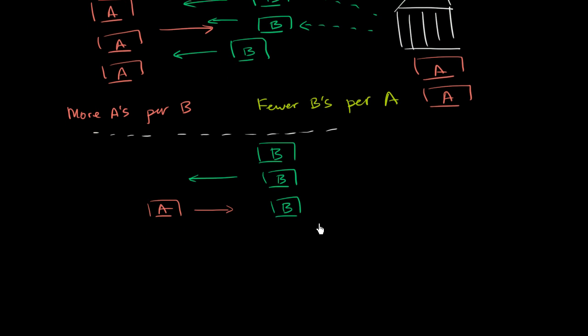Now, if foreign exchange markets were allowed to float freely, what would happen? Well, in this situation, all the demand is for the A's and all of the supply is on the B's. So you would have fewer A's per B.